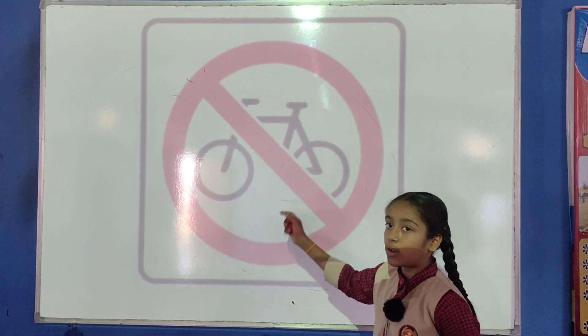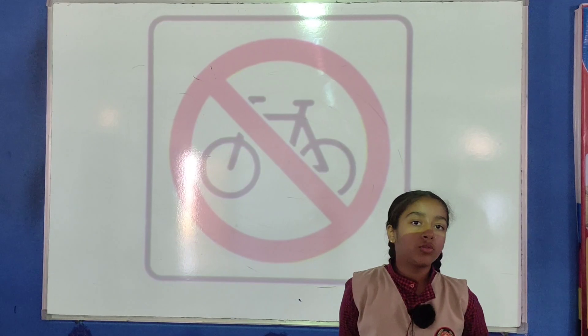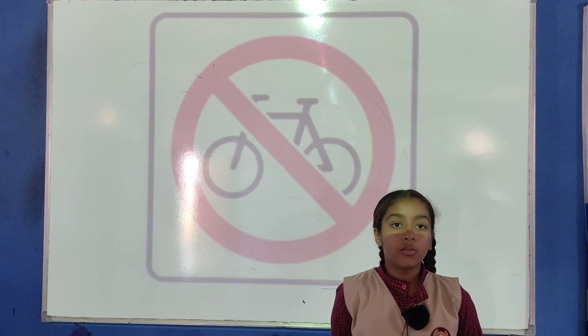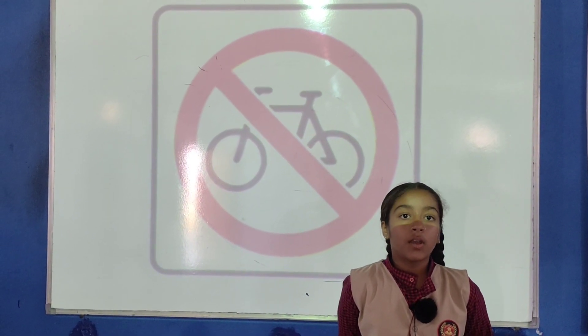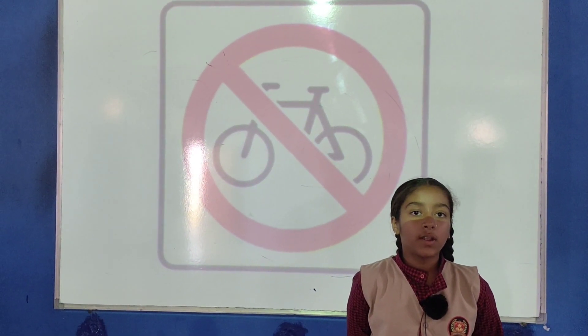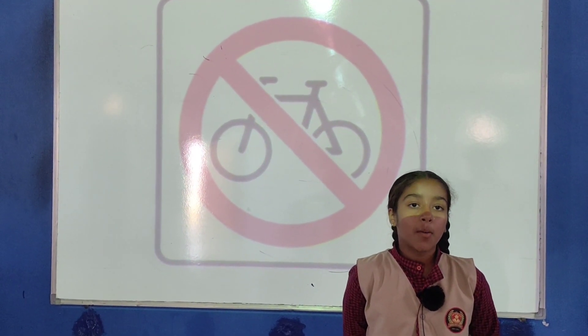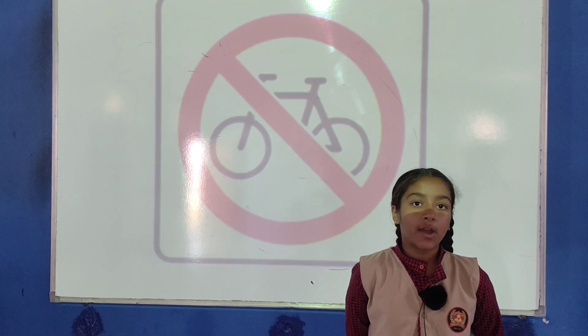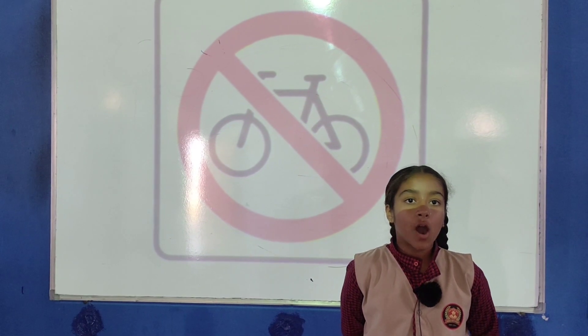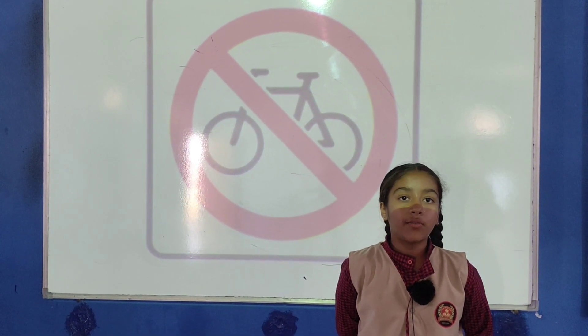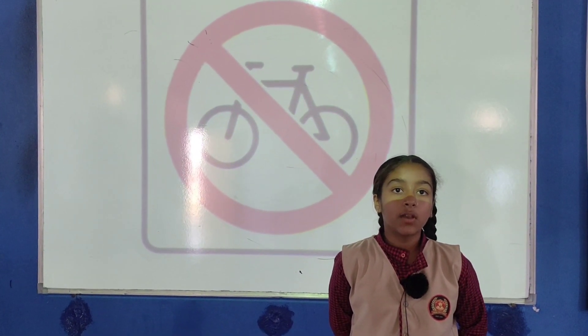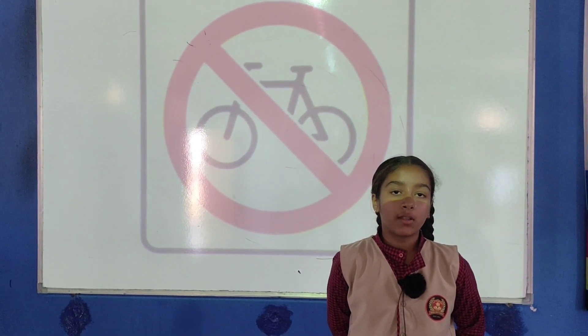This is the sign of no bicycle. The sign indicates that bicycles and tricycles are prohibited from passing beyond the sign.